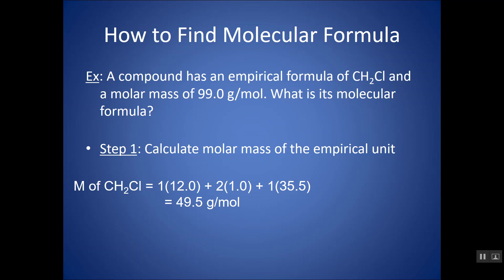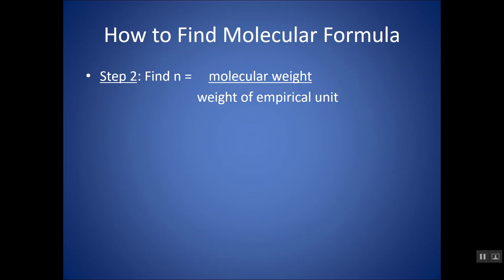What else do they give me in the problem? They give me the molar mass of the molecular. So by using these two molar masses, I can figure out how many times bigger the molecular formula is than my empirical. So all I'm going to do is divide these two numbers, and that's going to give me what I can call n, the integer that I'm going to have to multiply my formula by.